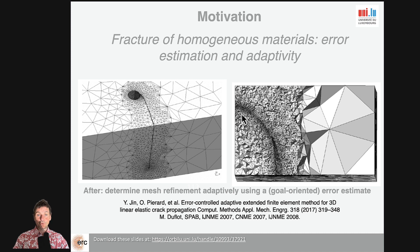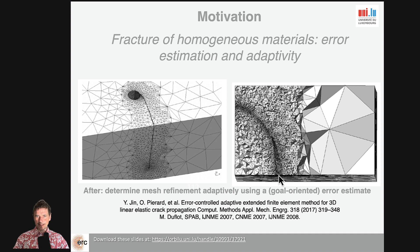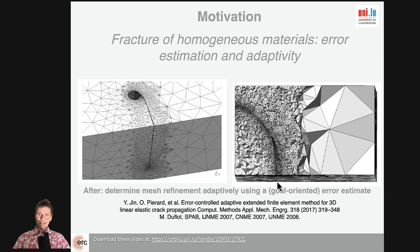Not only is the accuracy the same, but on top of that we can determine how accurate the solution is — not only in energy, so the H1 norm as I showed in the math introduction before, but also in a goal-oriented way. Meaning that if it's very important to get accurate stress intensity factors in fracture mechanics, our goal is not the energy. We're interested in the stress intensity factor. So why not use the stress intensity factor as a goal? We can compute the optimal mesh for a given crack in order to minimize the error on the stress intensity factor, so that when we compute delta A, the error is minimized.